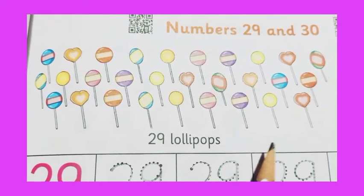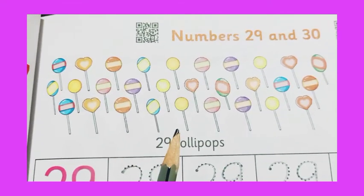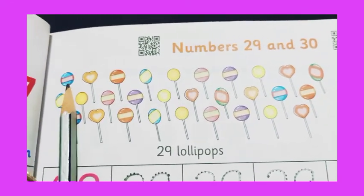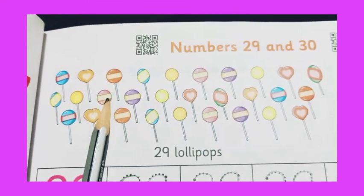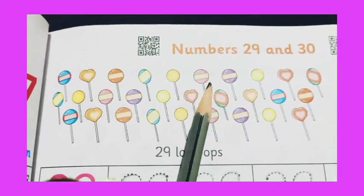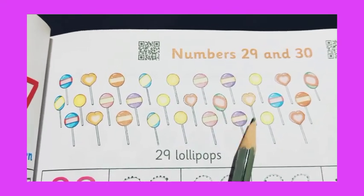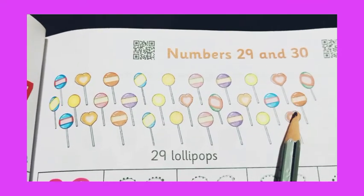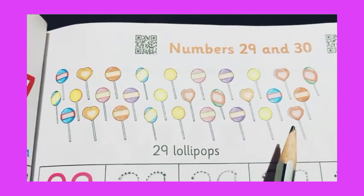See students, here you can see many different, different colored lollipops. And what do we have to do with the lollipops? We have to count. Count together. Let's start. 1, 2, 3, 4, 5, 6, 7, 8, 9, 10, 11, 12, 13, 14, 15, 16, 17, 18, 19, 20, 21, 22, 23, 24, 25, 26, 27, 28 and 29. Here we have total 29 lollipops.